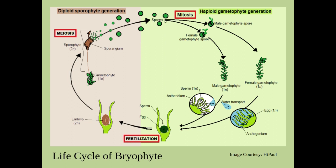The spore is haploid and when it germinates, it forms a haploid gametophytic plant. On the haploid gametophytic plant, antheridium and archegonium are produced. Antheridium gives rise to sperm and archegonium produces egg. Sperm, with the help of water, travels to the archegonium and fertilizes with the egg. We can see sperm coming to the egg and after fertilization, it converts into a zygote and then an embryo, which is diploid.